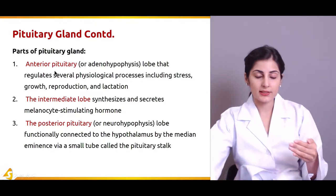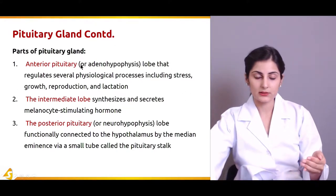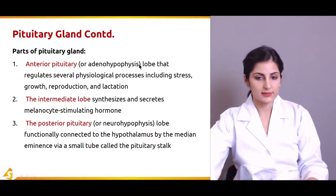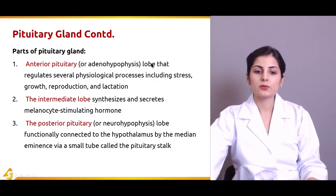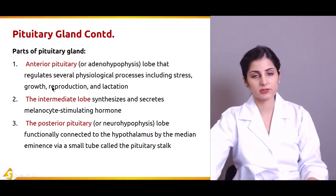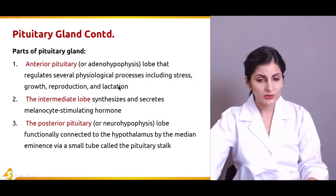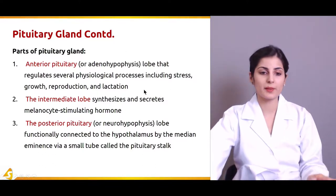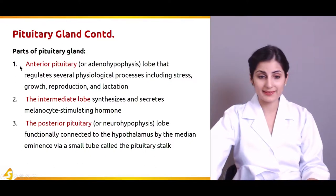There are three parts of the pituitary gland. The first part is the anterior pituitary, also called adenohypophysis. It is a lobe that regulates several physiological processes including stress, growth, reproduction, and lactation. These are the functions performed by the hormones produced specifically by this lobe of the pituitary.